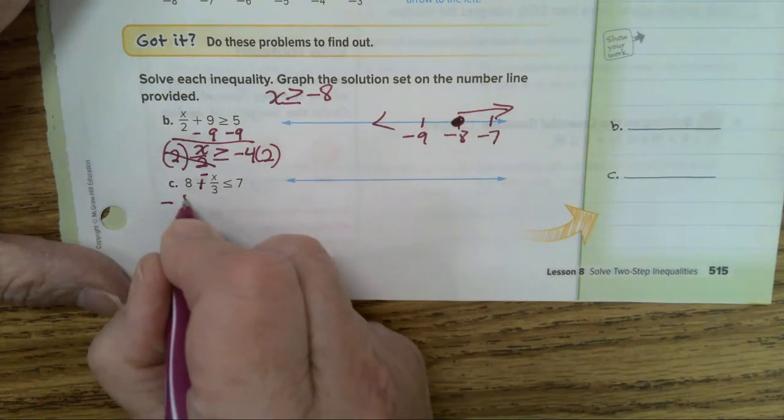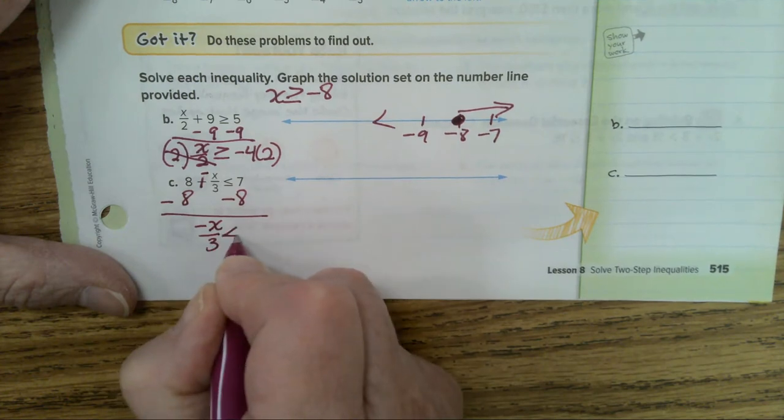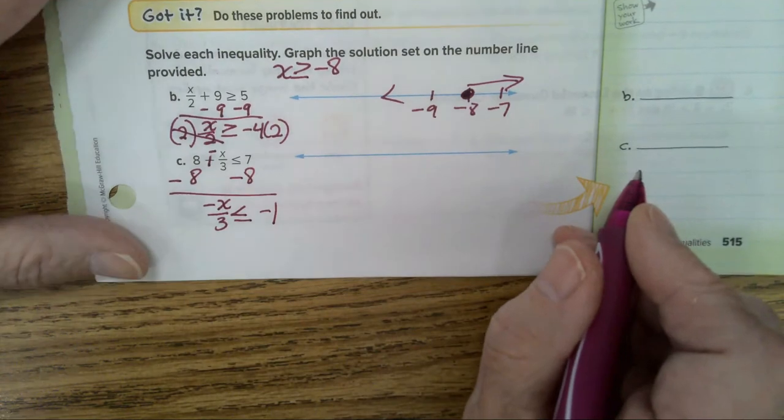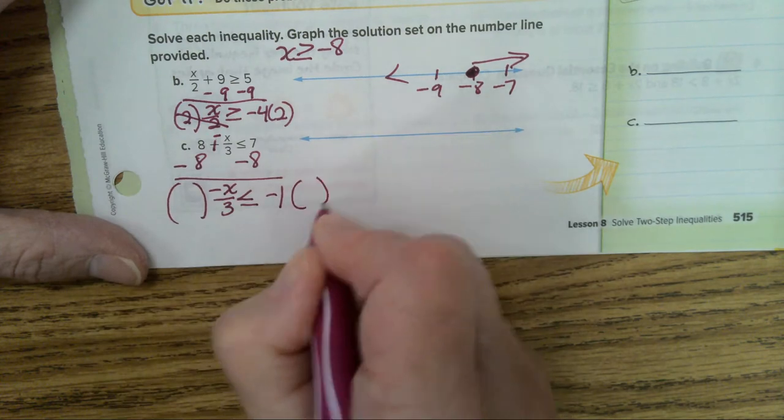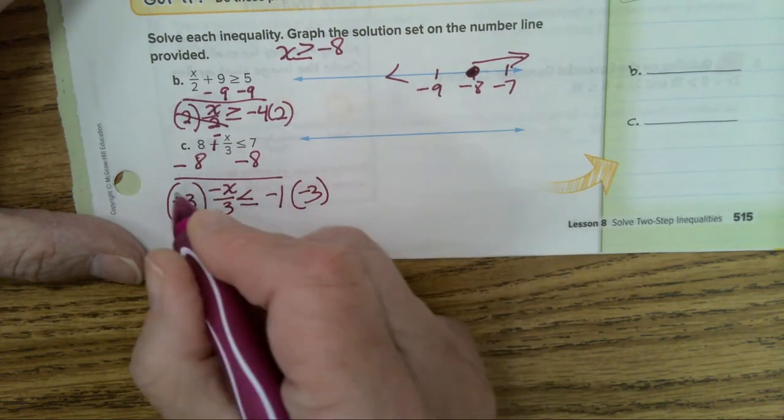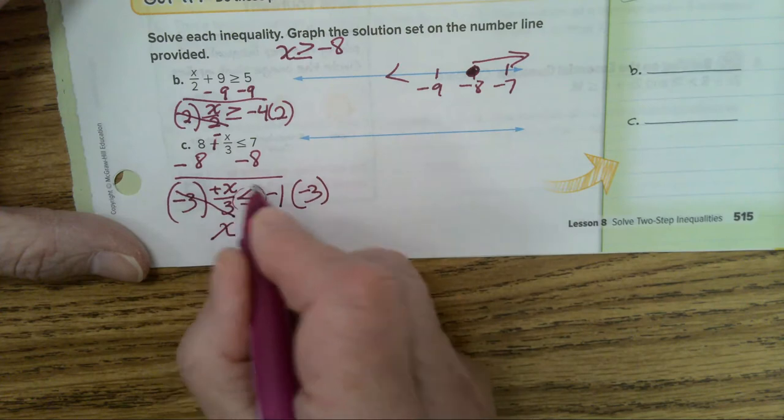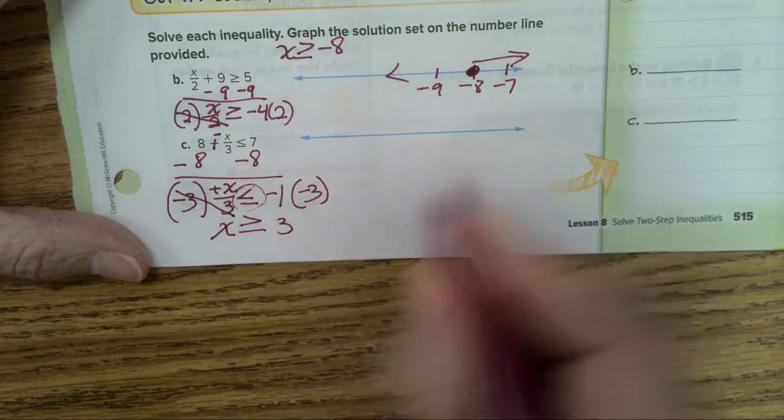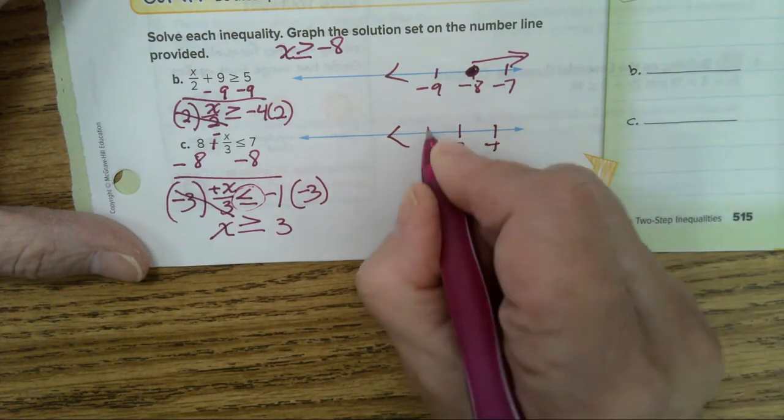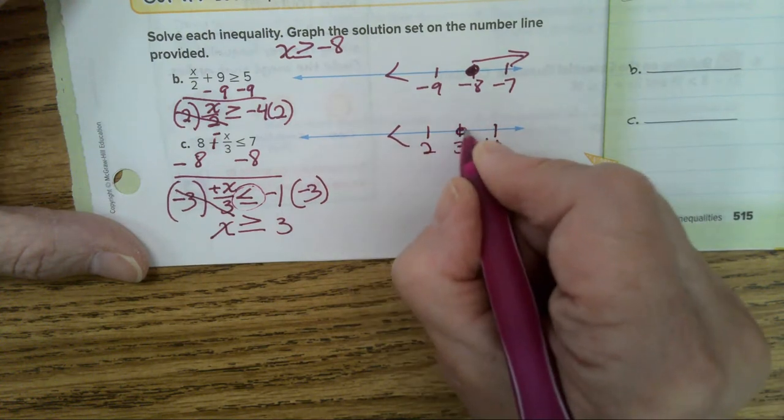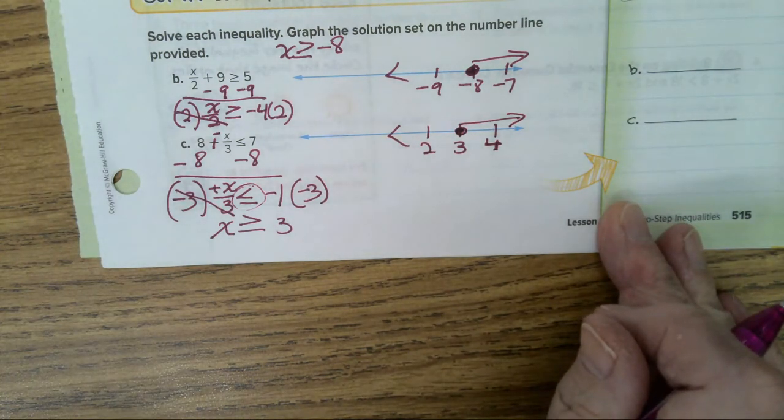Now we can make that negative, minus eight, minus eight. Negative x over three is less than or equal to negative one. Now I want to get rid of this three and I want to get rid of the negative sign, so I'm going to multiply both sides by a negative three. That takes care of this and it makes that positive. And that flips it. X is greater than or equal to three. Closed circle going to the right.